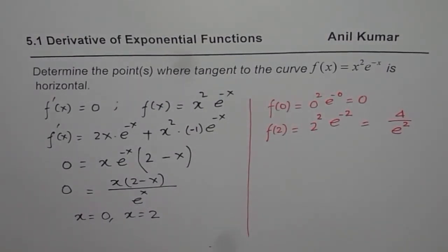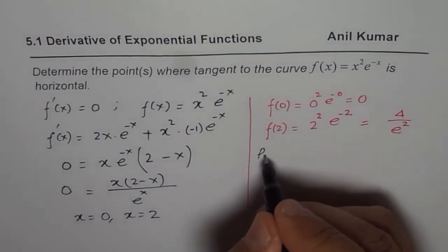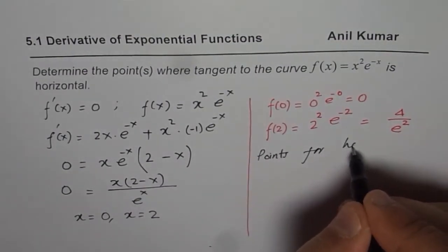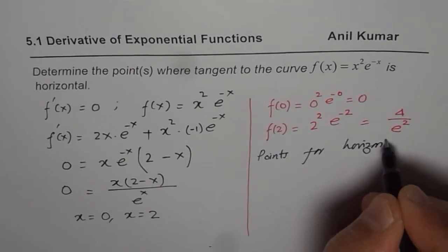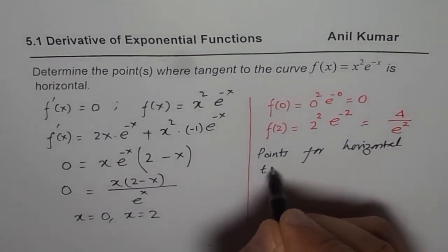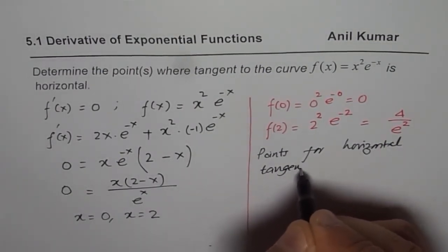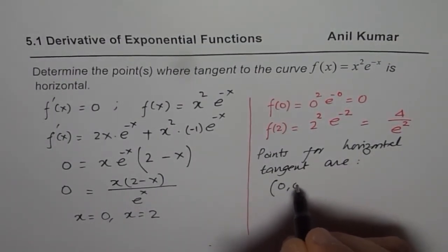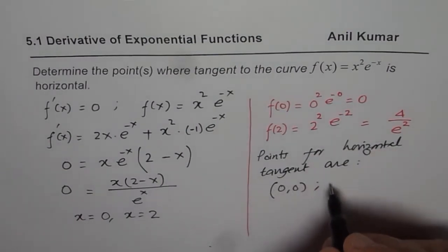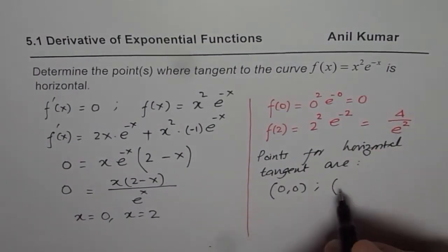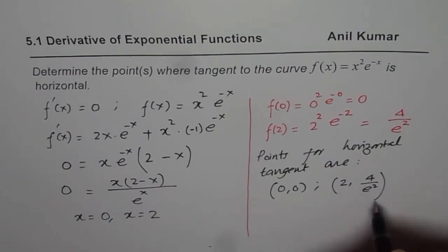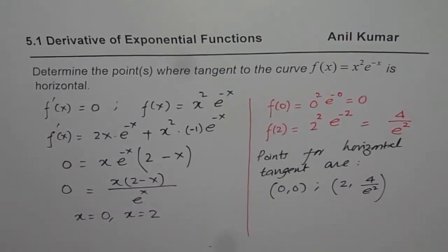So that is the value. And therefore, the points for horizontal tangent will be 0, 0. At origin, it will have a horizontal tangent. And the second point is at 2, 4 over e squared. So that is how you can get a solution of this question. I hope that helps. Thank you.